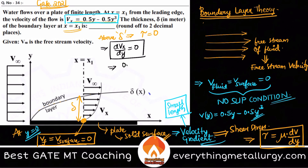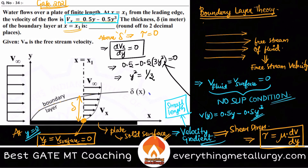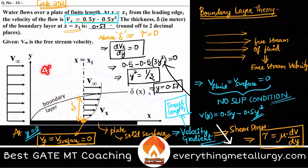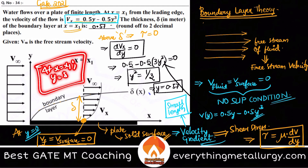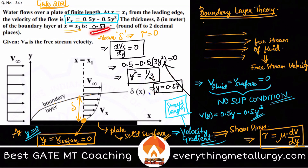We know d/dy of vx equals 0.5 minus 0.5 times 3y squared. Setting this equal to zero gives y squared equal to 1/3. From here you can easily get the value of y, which comes out to be 0.57. So the answer is delta equal to 0.57 meters. At x equal to x1, y is equal to delta, so we have calculated the boundary layer thickness as 0.57 meters using boundary layer theory.